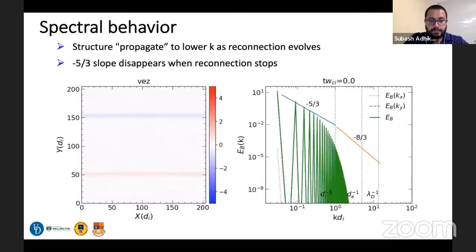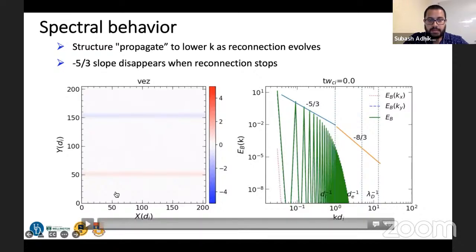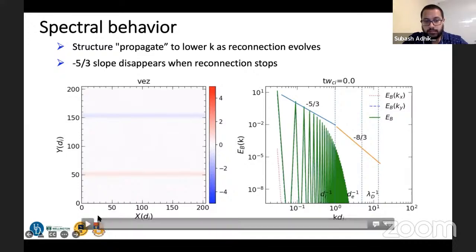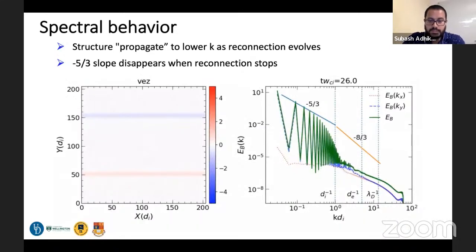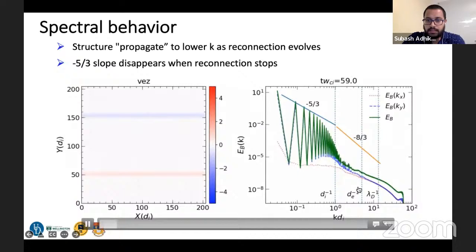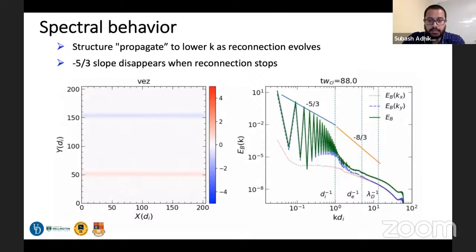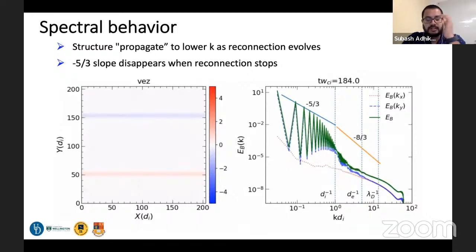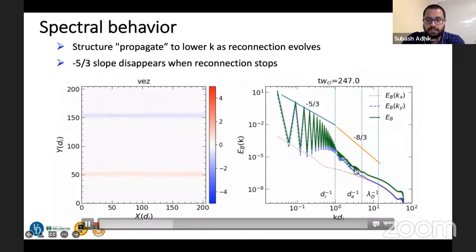Here I will show a movie of the spectral behavior. On the left-hand side you have the out-of-plane velocity; on the right-hand side you have the magnetic energy spectrum at t equals zero. Once the system starts, the energy spectrum shows significant changes. Since no reconnection has started yet, nothing much has happened over the inertial scales. Reconnection starts at around t=220–250. As you approach that time, you see small structures propagating towards the inertial scale.